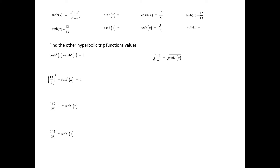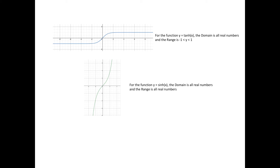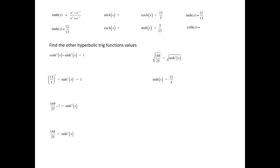Now, applying a square root to both sides — again, note that no plus or minus is applied to the radical. The graph of the hyperbolic tangent function has domain all real numbers and range from negative 1 to 1. The hyperbolic sine function also has domain and range of all real numbers. However, both the hyperbolic tangent and hyperbolic sine share the property that when x is negative, y is negative, and when x is positive, y is positive. Since the hyperbolic tangent function value is positive in this example, there is no need to apply plus or minus on the radical.